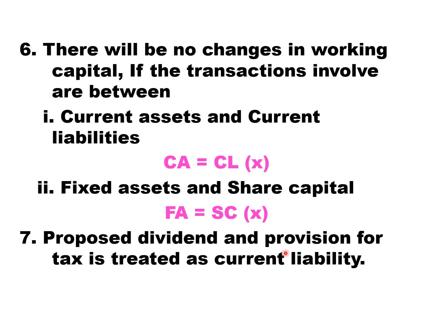Seventh point: proposed dividend and provision for tax are treated as current liabilities. Proposed dividend means dividend declared but not yet paid. Provision for tax is an amount set aside to meet future tax liability. So when working out problems, proposed dividend and provision for tax will be treated as current liabilities. With this, the theory aspect of fund flow statement comes to an end. Next class, we will look at practical problems. Thank you.